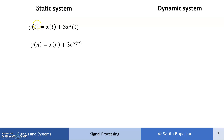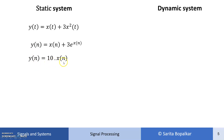For a discrete time static system: y(n) = x(n) + 3e^(x(n)). Here the exponential operation is on the amplitude, so time is the same in the output and input. The present output depends upon the present input. Similarly, y(n) = 10x(n) — this operation is on amplitude, not on any time factor, so the present output depends upon the present input only. Both are static systems.